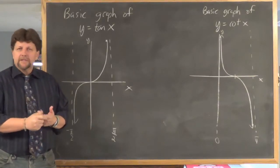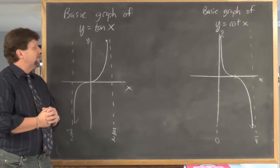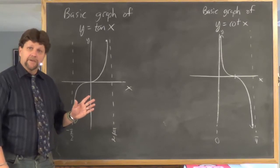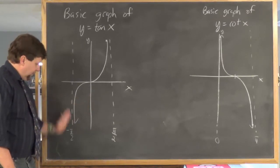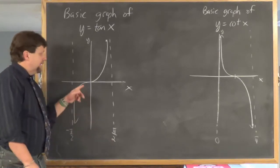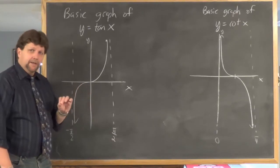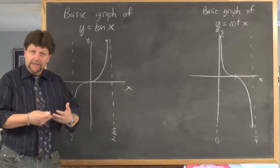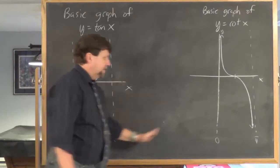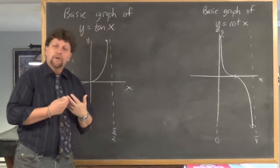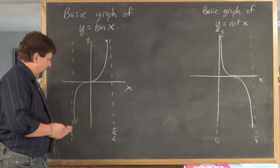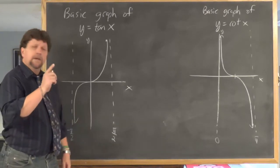So far we've seen the basic graphs of sine and cosine. Here's the basic graph of tangent x. Notice the general shape — it has a vertical asymptote at negative pi over 2 and a vertical asymptote at pi over 2. This is just the basic graph over one period. Remember, what period tells you is that this basic graph would be repeated. The period is from negative pi over 2 to pi over 2.